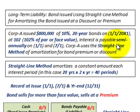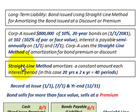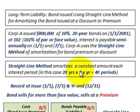Corporation A uses the straight-line method for amortization of either the bond premium or the bond discount. When using the straight-line method, we're amortizing at a constant amount each interest period. With 20-year bonds and semi-annual payments, we're going to have 40 periods to amortize.